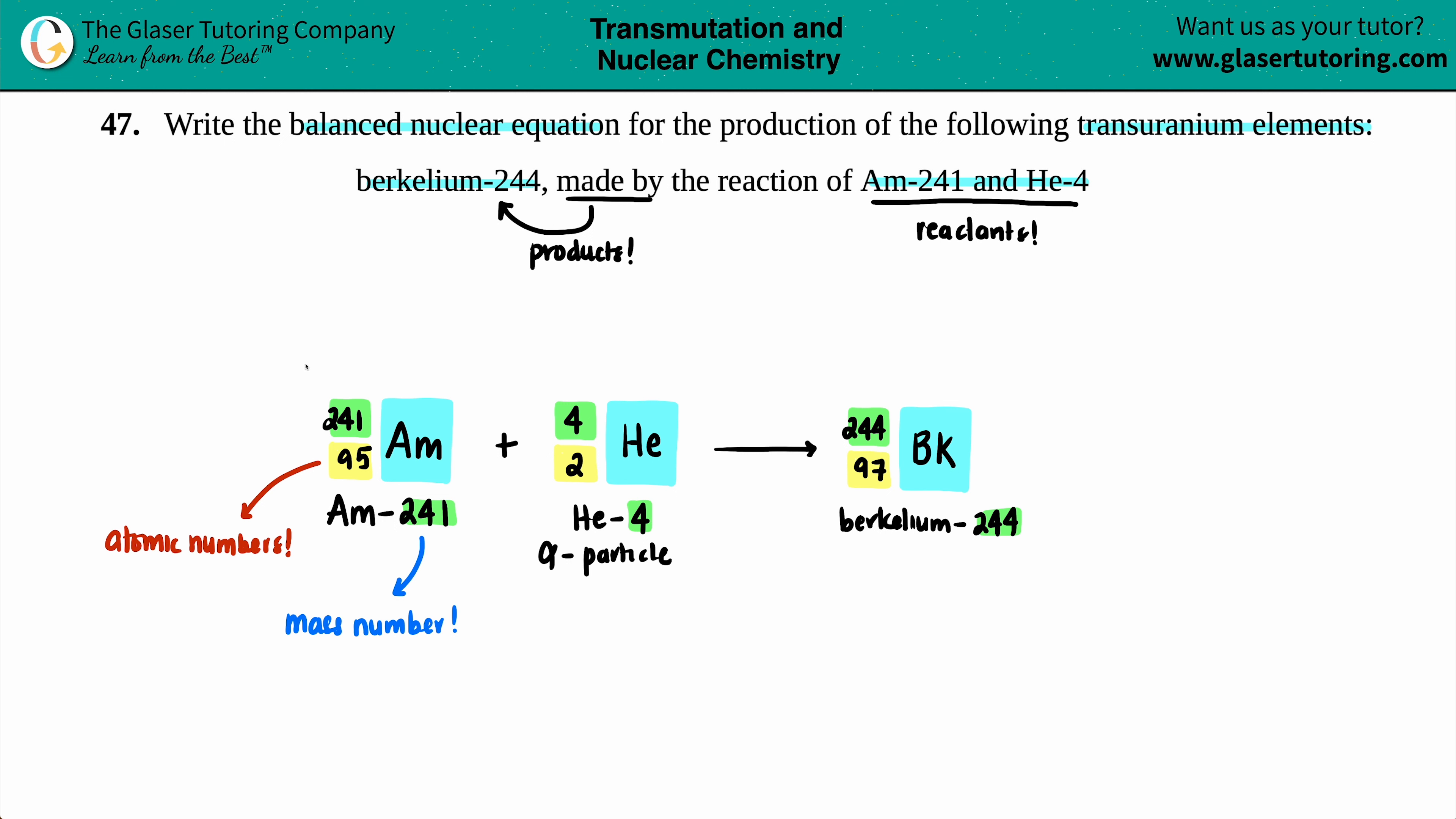Now let's see if we have a balanced equation. Because if all the mass numbers across the board equal each other from the reactants to the products and the atomic numbers across the board equal, then we're balanced. But let's see. 241 plus four is 245. Hmm. This is only telling me that I have 244. So that's an issue. But then on the bottom, it looks good. 95 plus two is 97. But it seems like we're missing something on this side to make your mass numbers the same.